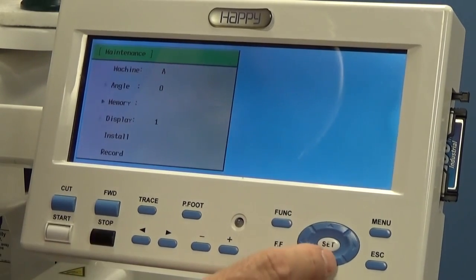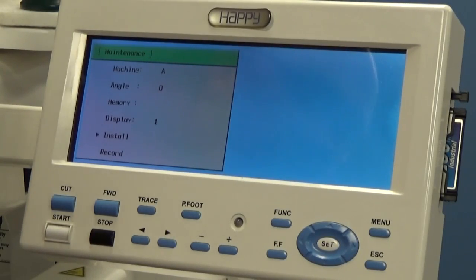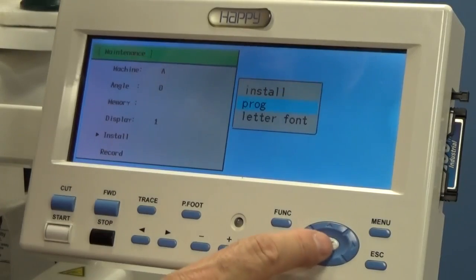We're going to do install. Now this time, we've already done the English. We've already done the LCD. So this time, we're going to actually do the operating system. Let's press set on install. This time, we're going to actually go down to PROG, short for program. Press set.